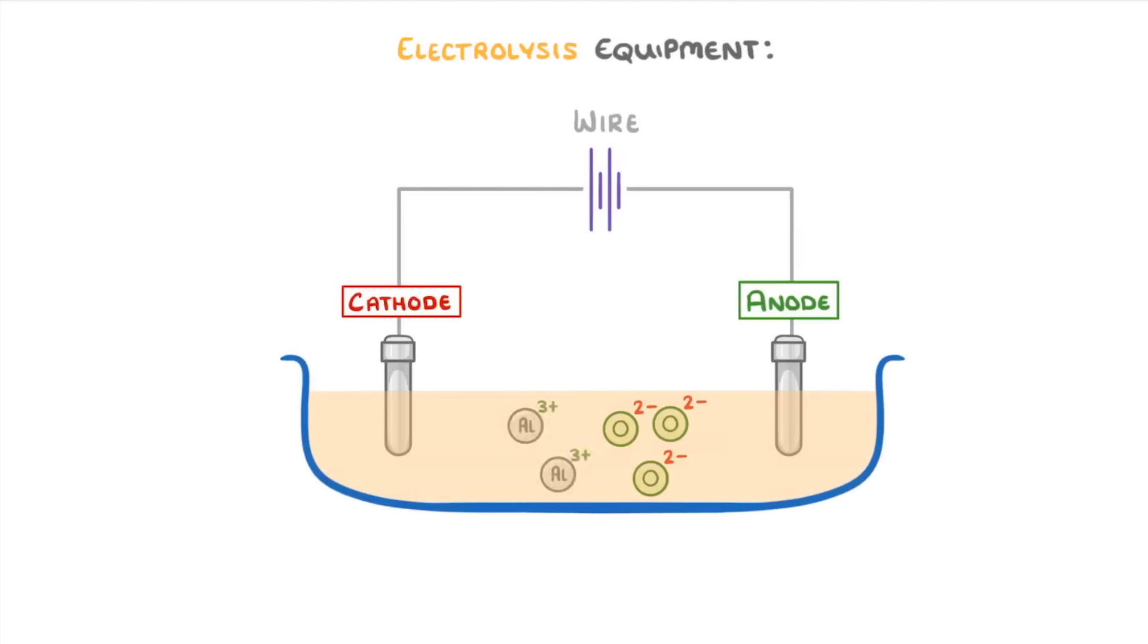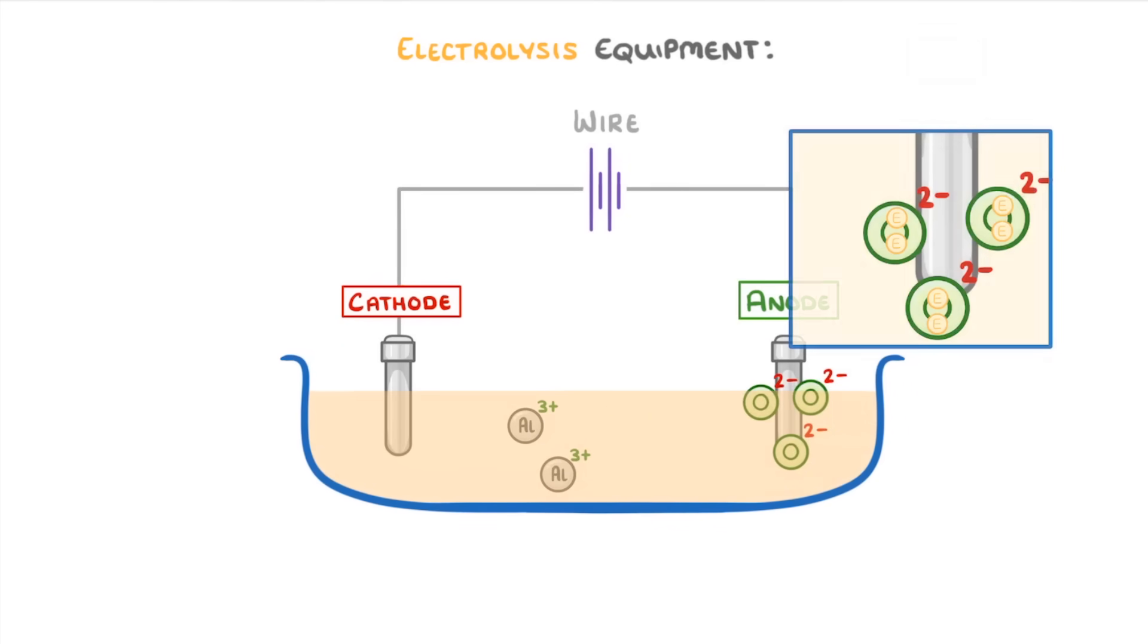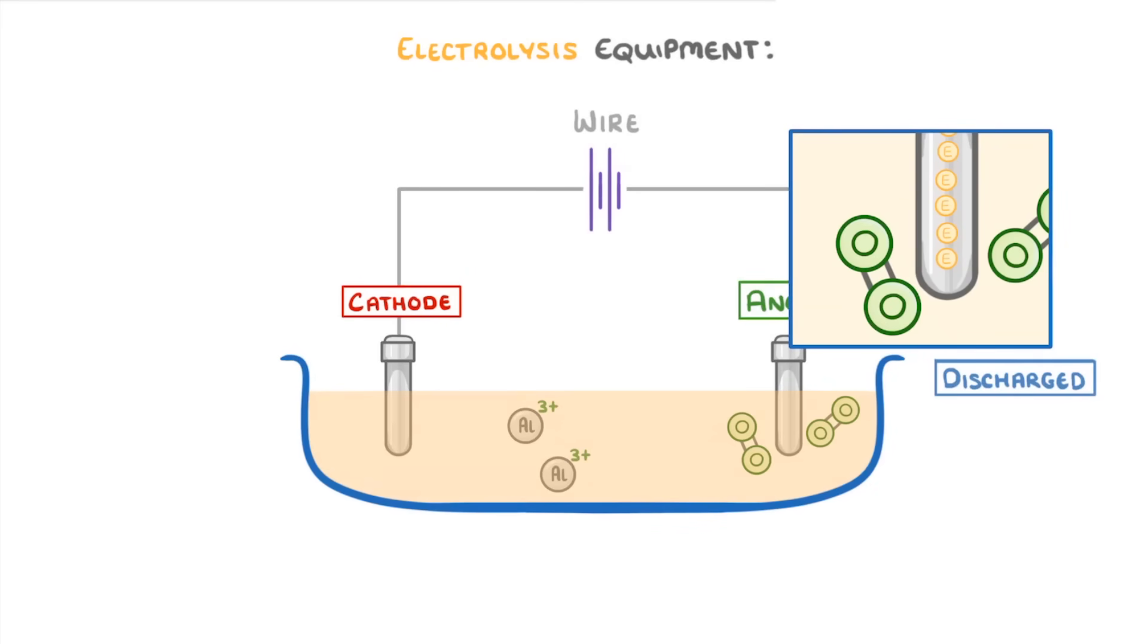Because they're negative, the oxygen 2- ions will be attracted to the positive anode on the right, where they'll transfer their two extra electrons to the anode, and be discharged to oxygen atoms, at which point each pair can combine to form an oxygen molecule and float off into the air.